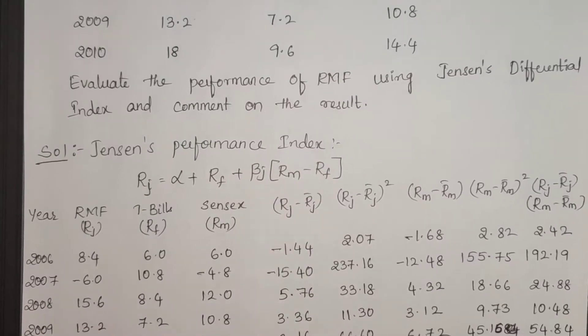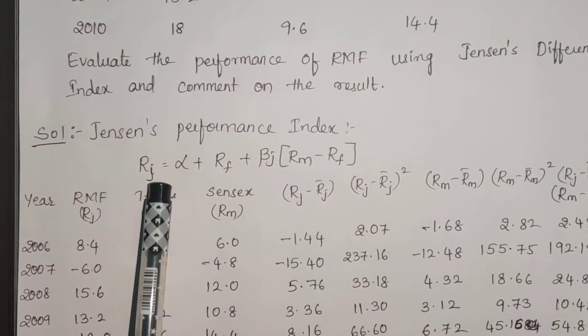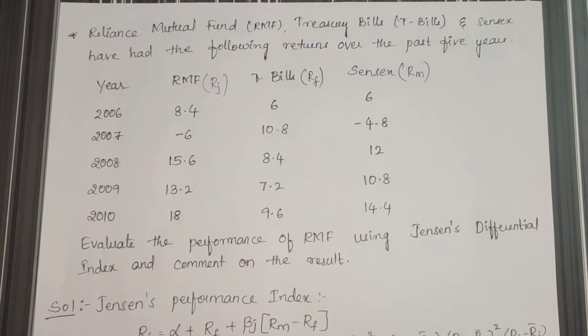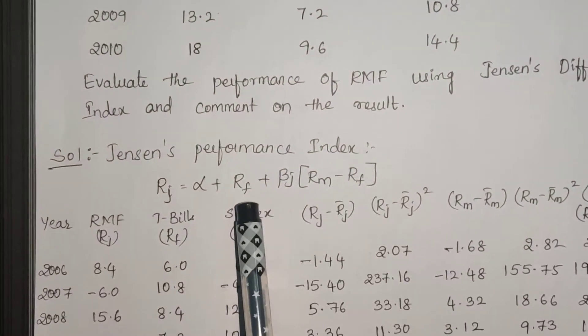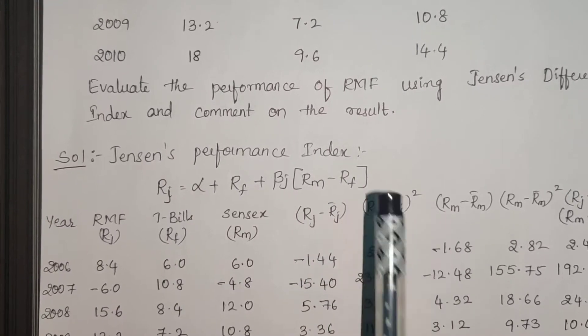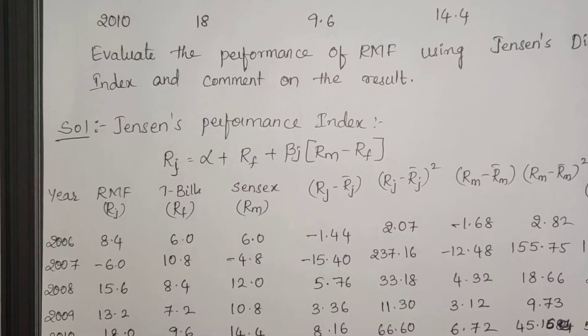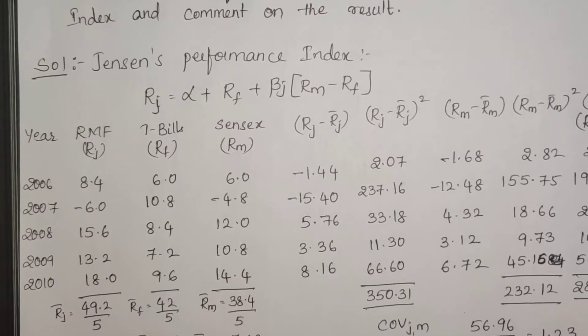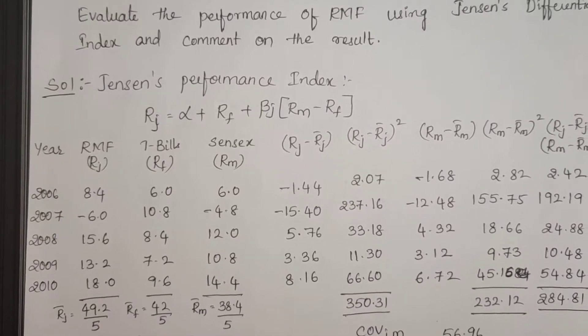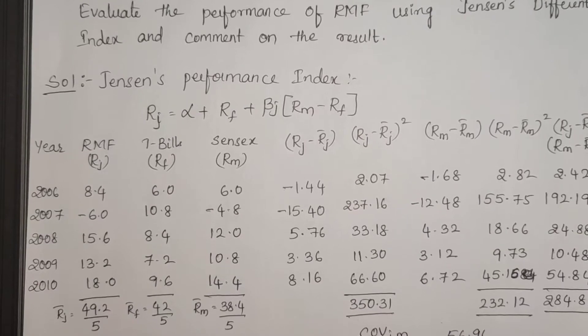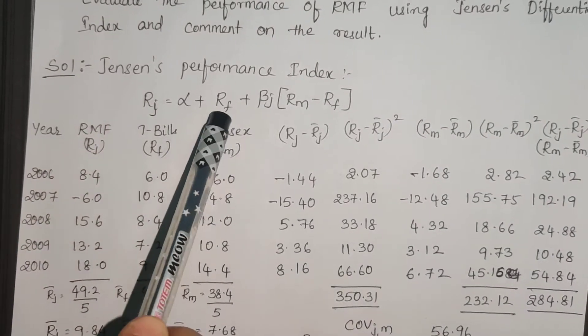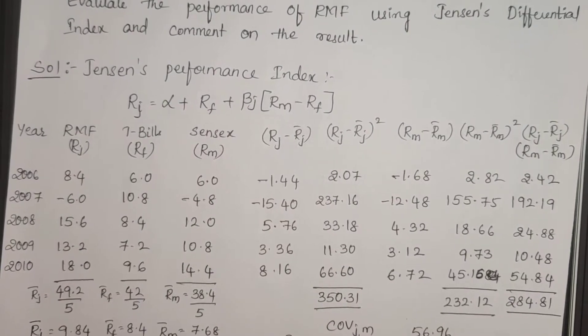Jensen's Performance Index is calculated as RJ equals alpha plus beta times (RM minus RF). We have to rank the securities for 5 years. First and foremost step is calculation of expected return on portfolio, expected return risk-free rate of return, and expected market return.